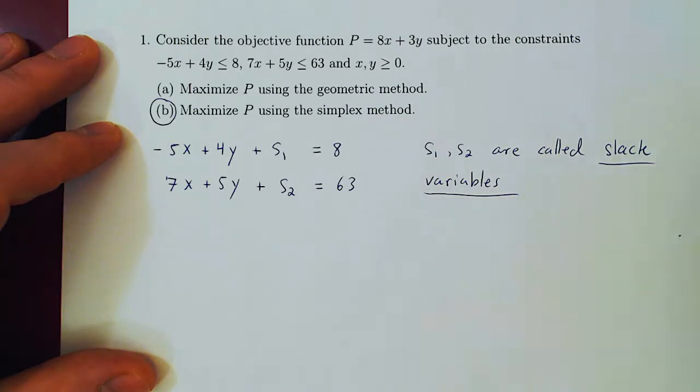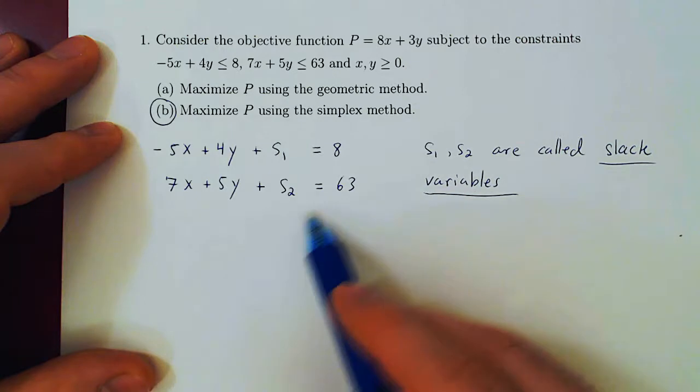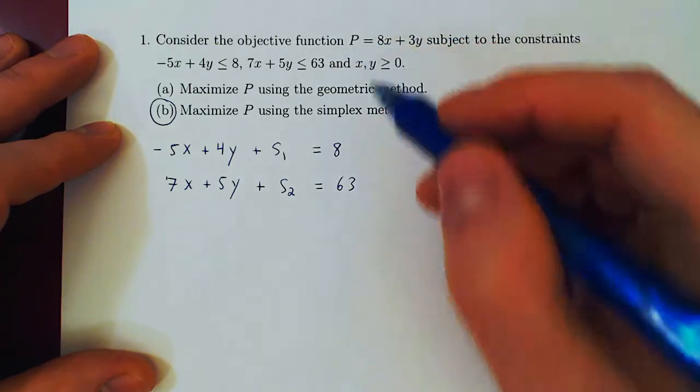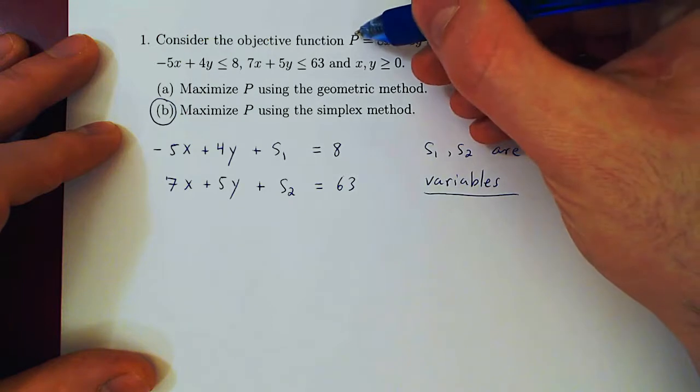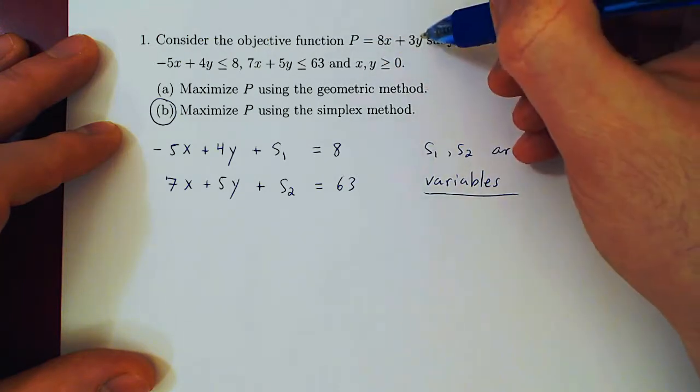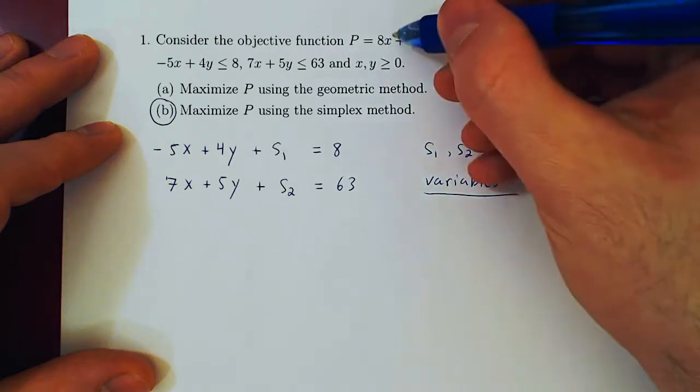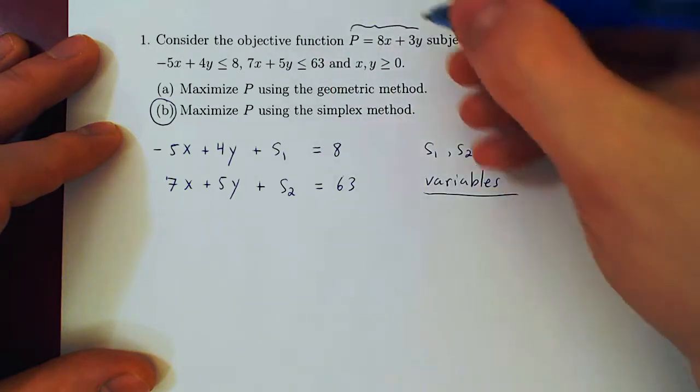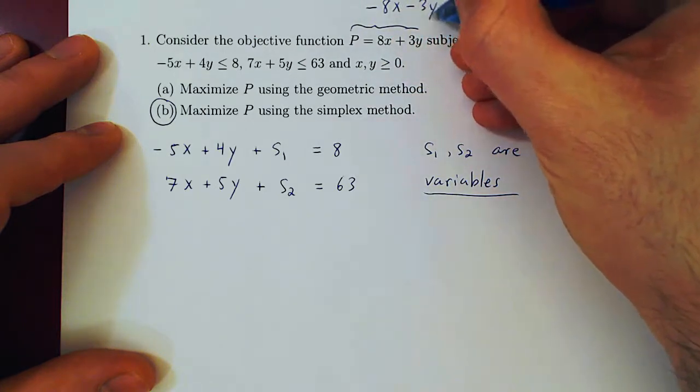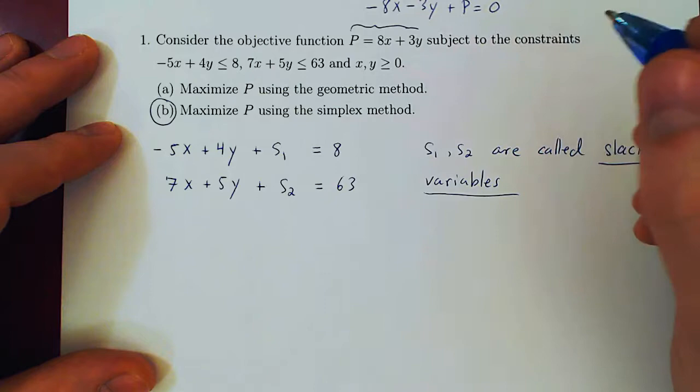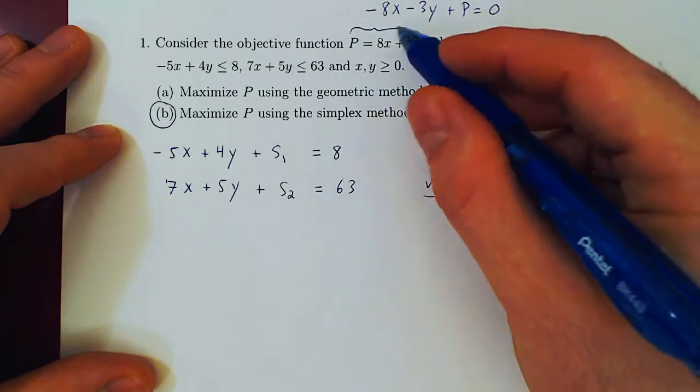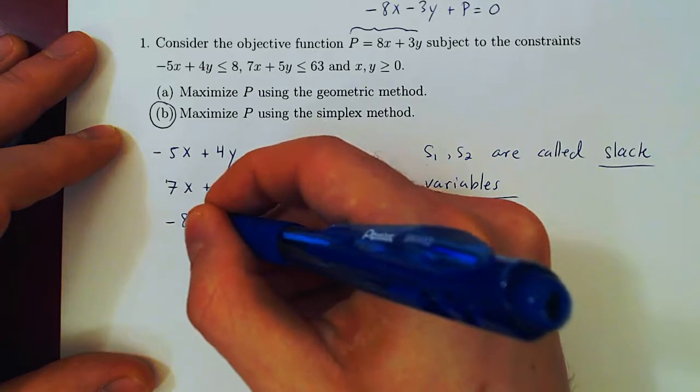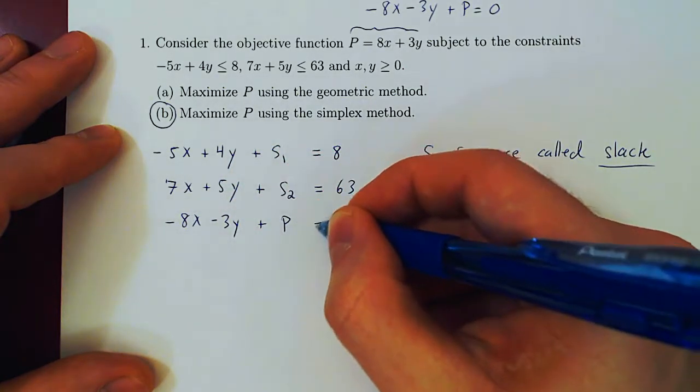So this is the first step, how to transform the inequalities into equalities by adding so-called slack variables. We want to rearrange then, this is step two, the objective function. We always leave p where it is and we subtract everything else to the other side. So the equality, if you send 8x plus 3y to the other side will become negative 8x, negative 3y plus p equals zero. Always be careful. We always leave p on the left-hand side and send everything else to that side. So it will always remain positive p. This becomes negative 8x, negative 3y plus p is equal to zero.